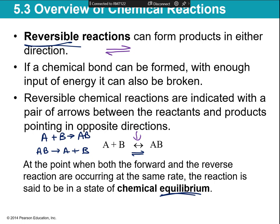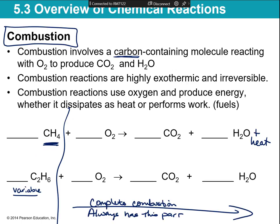Reversible reactions reach a point where, in a container, A combines with B to make AB (synthesis), and AB breaks down into A and B (decomposition). Eventually you reach a balance — a forward reaction and a reverse reaction — and you end up with some A, some B, and some AB. When the amount of reactants and products becomes equal and doesn't change over time, that's called equilibrium.